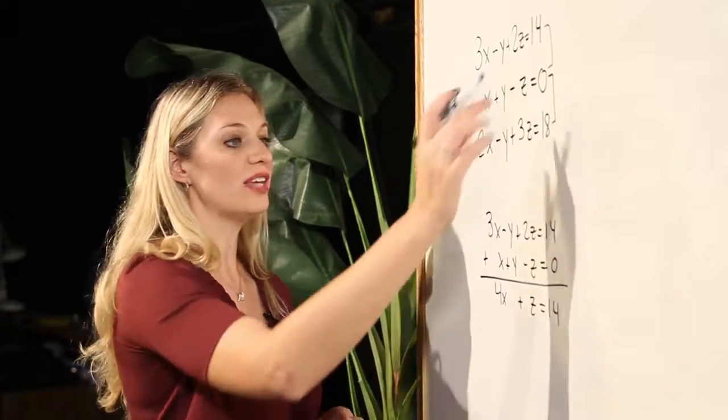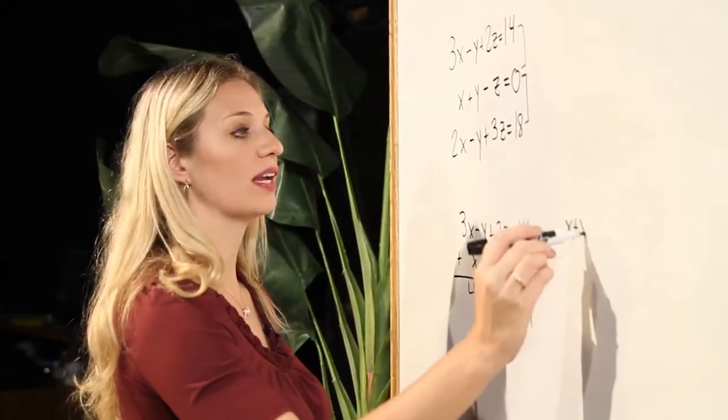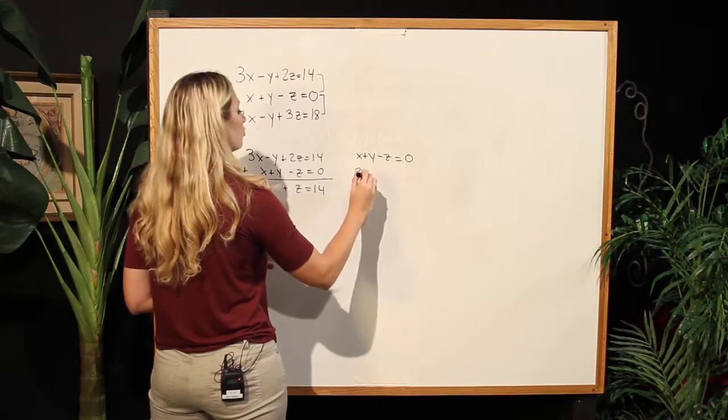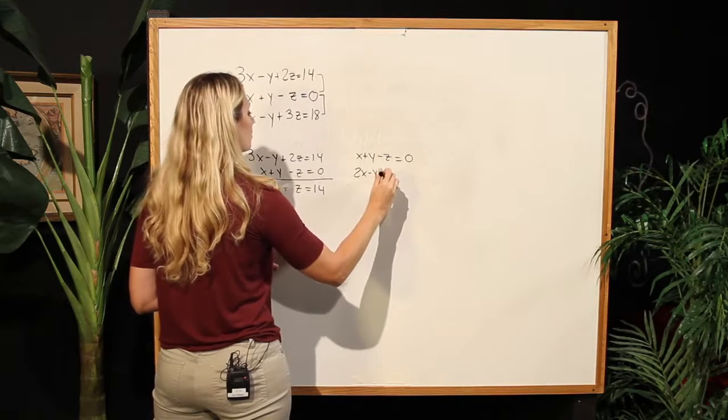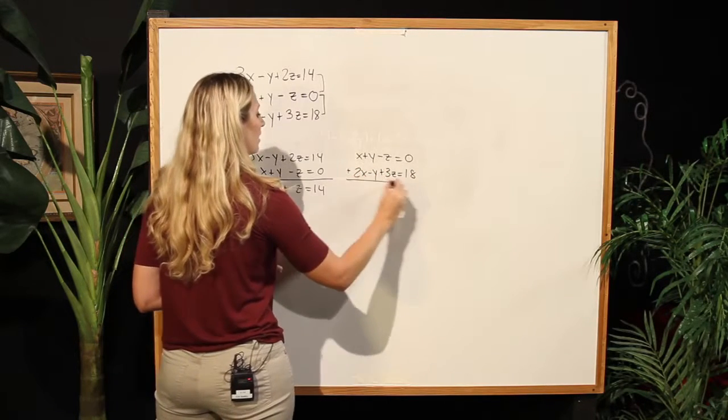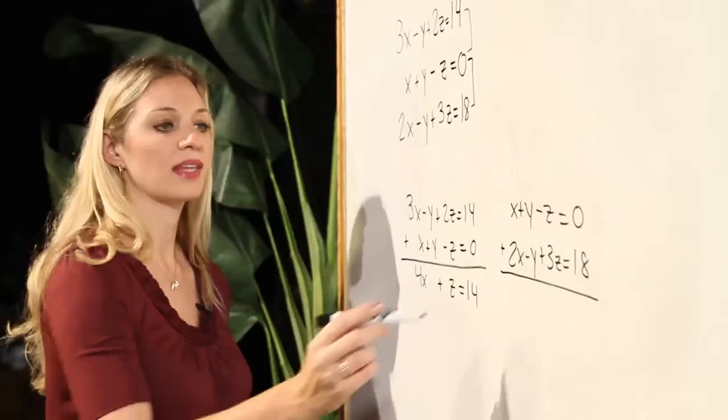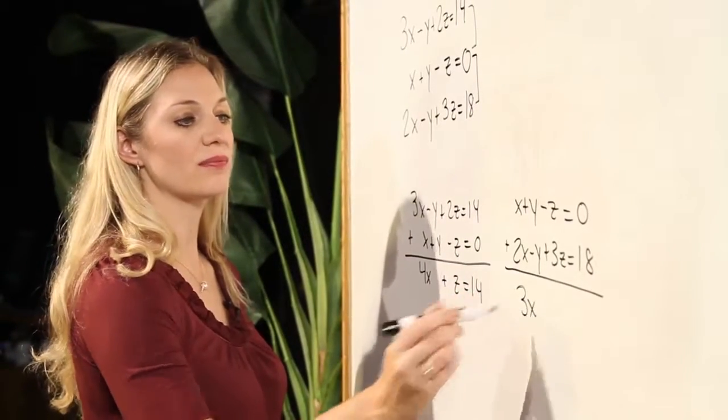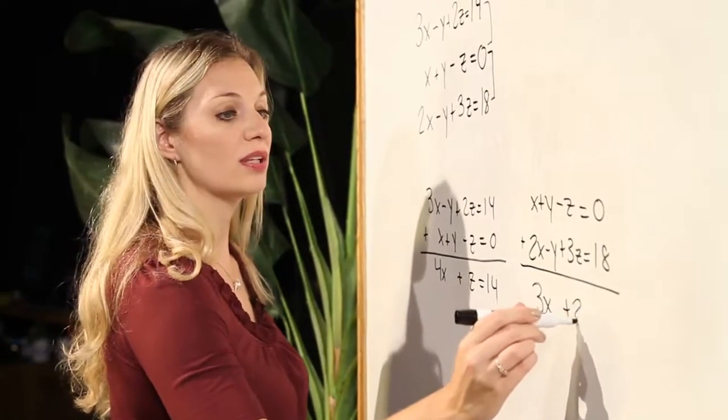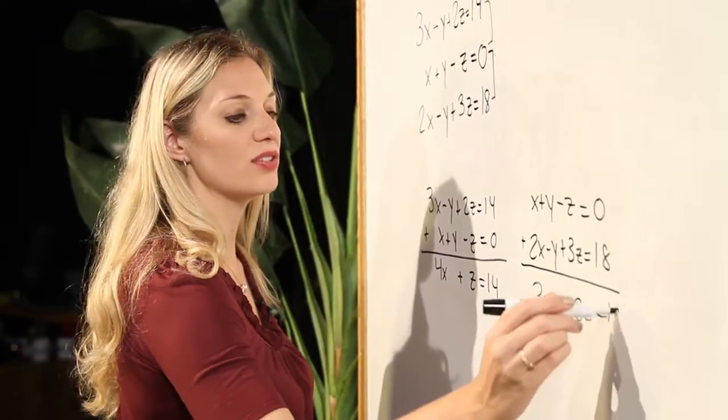Let's do the same idea on our second pairing. X plus y minus z equals zero, and 2x minus y plus 3z equals 18. We will add these equations together. I will now have 3x, the y's will zero out, plus 2z is equal to 18.